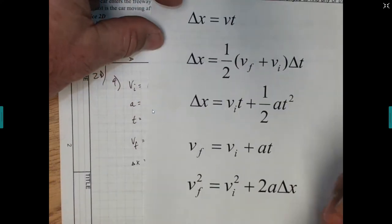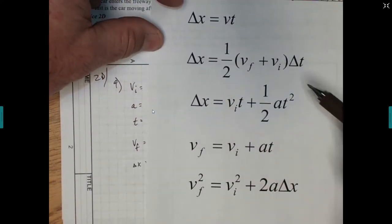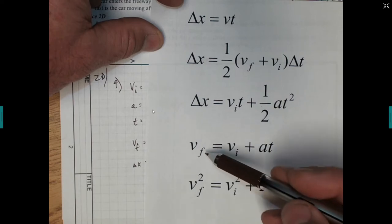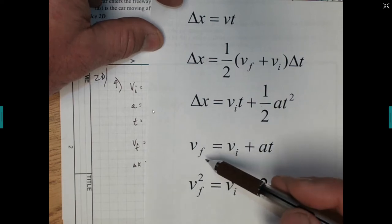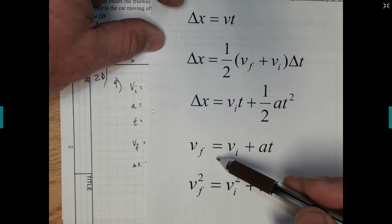And if we look over here at our worksheet, a lot of these have final velocity. Three of them do. This one has initial velocity, acceleration, and time, and it's solved for final velocity, so that one's amazing. It works perfectly.